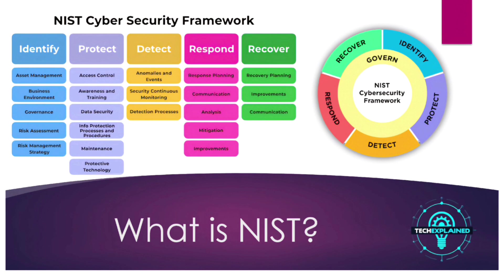The first step is to identify what you're working with. This is about understanding what you have and where your risks are. You can't protect what you don't know about. So this step is like taking inventory — what devices, data, and systems are you using? What could go wrong if they were compromised? It's also about understanding the rules and governance you need to follow. For example, if you handle customer data, what are the risks and responsibilities tied to that? This sets the foundation for everything else.